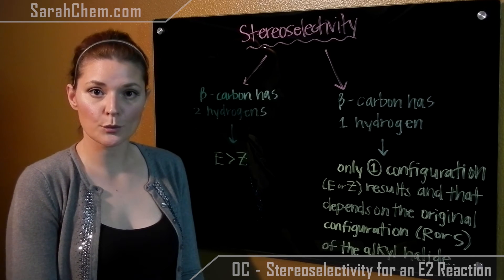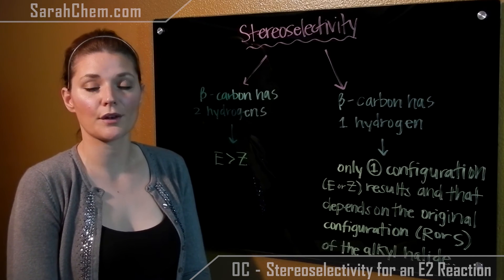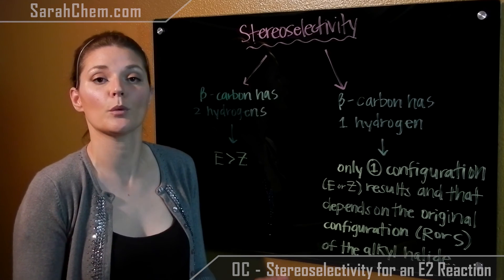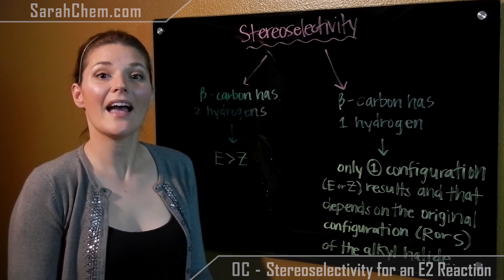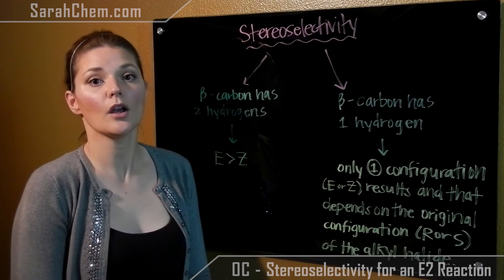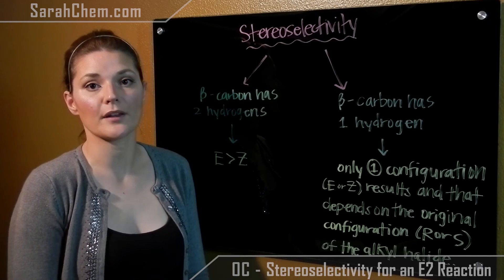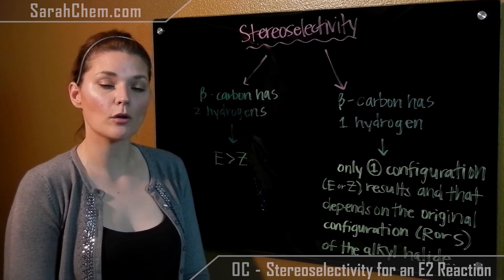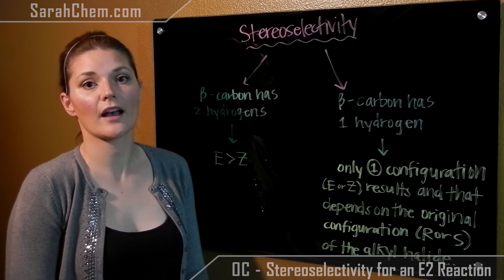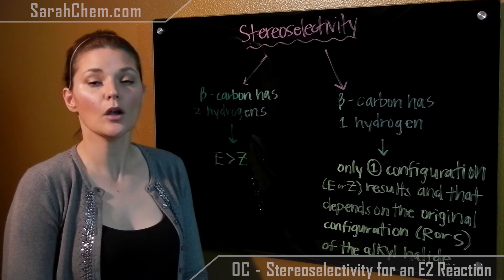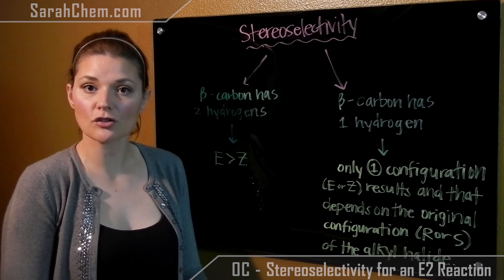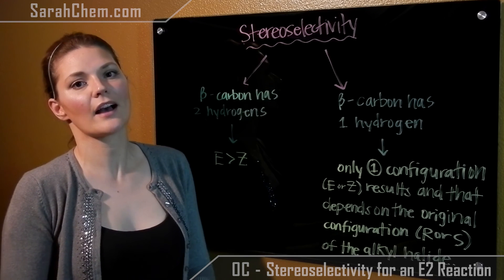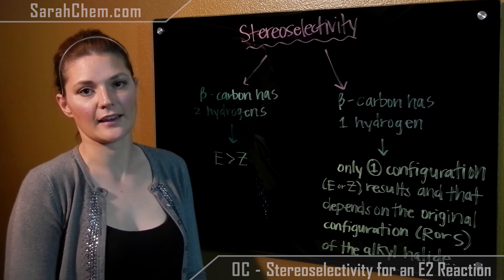First, the regioselectivity — which constitutional isomer will dominate — and then the stereoselectivity. Will I have only E come out, or will I have only Z? Or could I have a mixture of both where I primarily have E dominating?